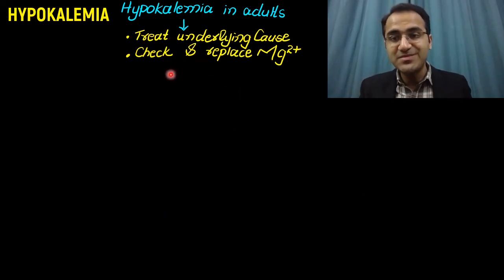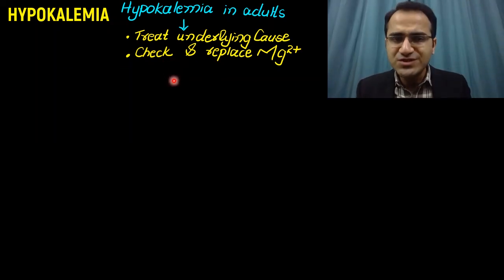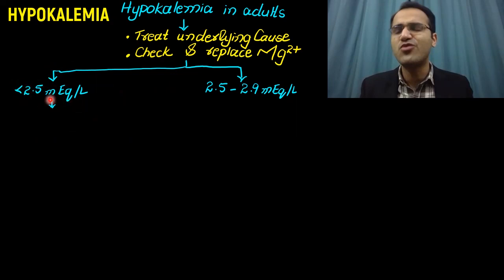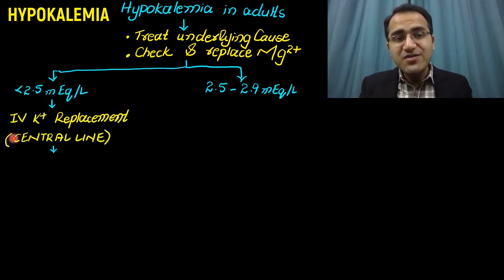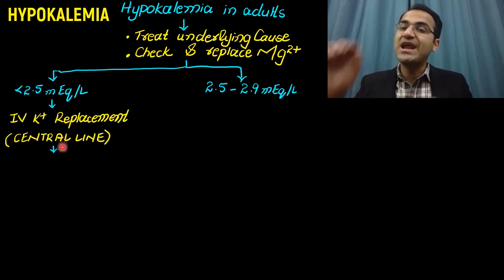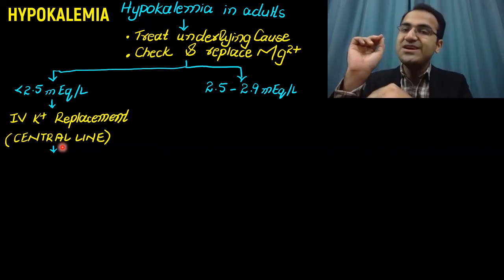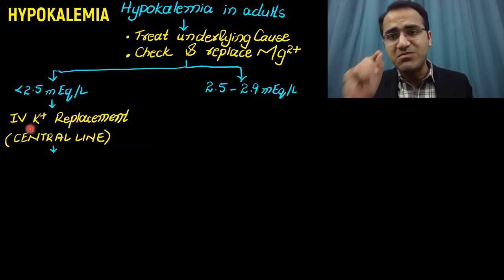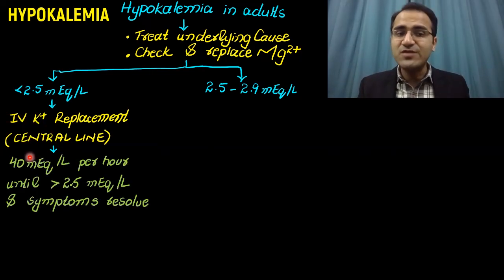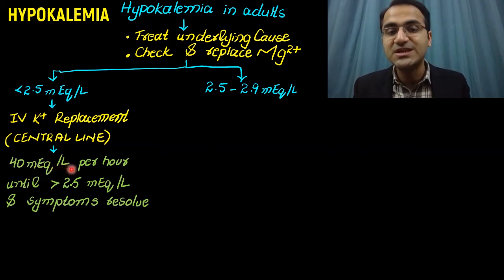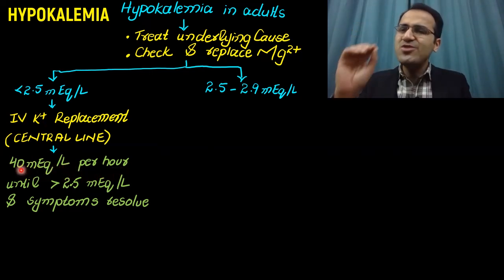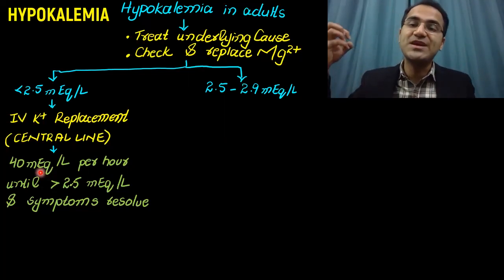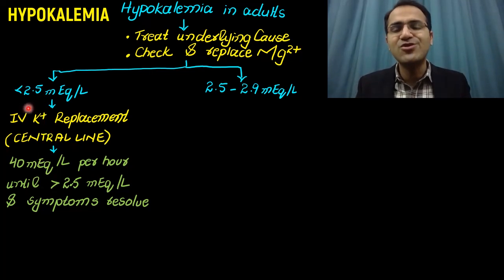After treating the underlying cause and correcting magnesium, replace the potassium. If the patient has severe hypokalemia with potassium levels less than 2.5 mEq per liter, rapid IV potassium replacement is needed. This cannot be done through a peripheral line because potassium is a venous irritant. Severe hypokalemia requires IV potassium replacement through a central line, preferably in the ICU with cardiac monitoring, at a rate of 40 mEq per hour.